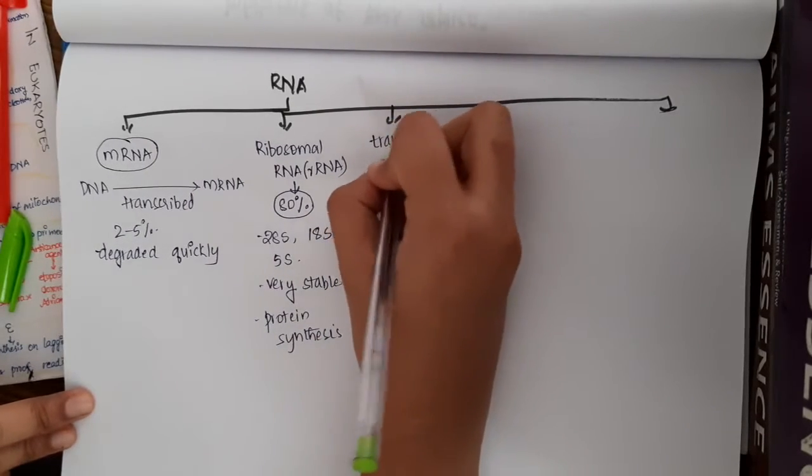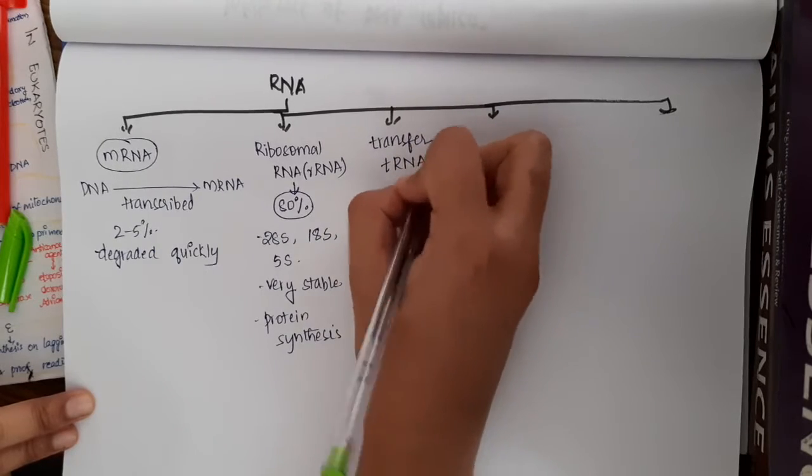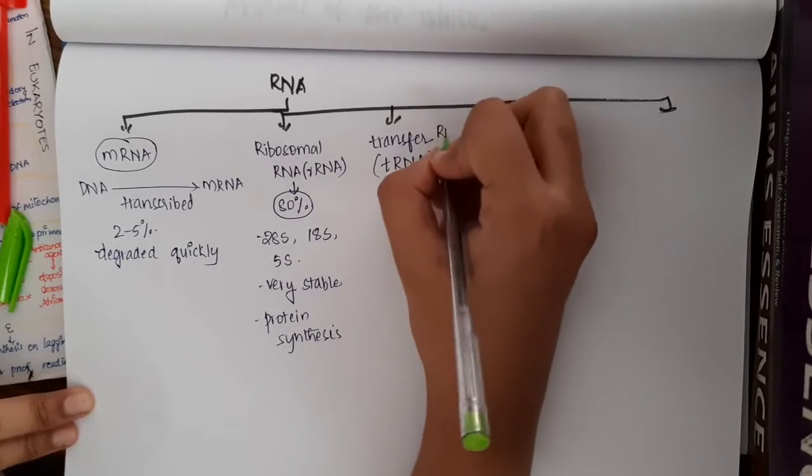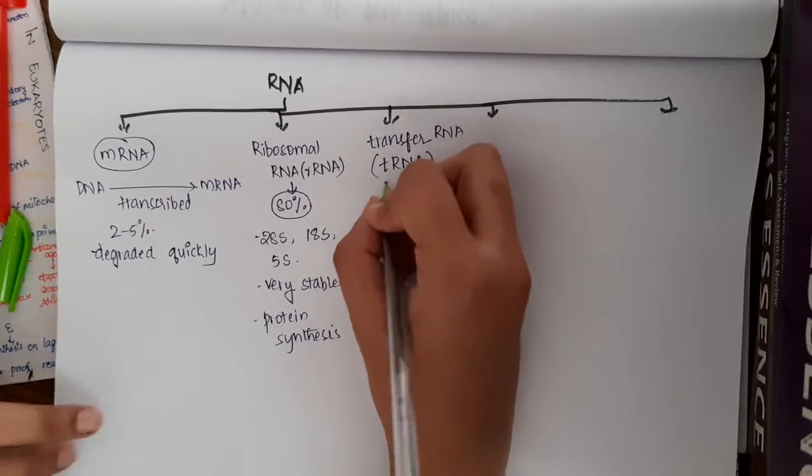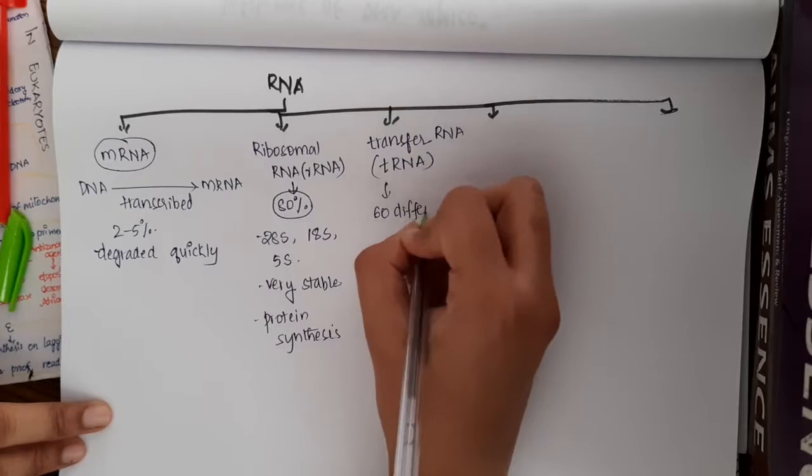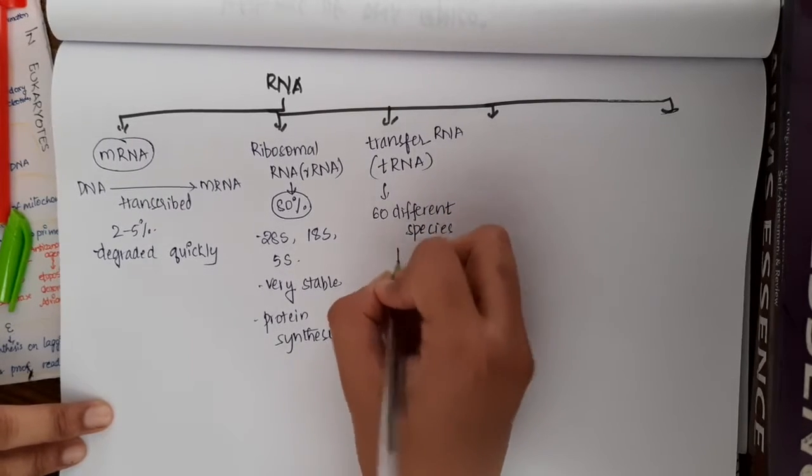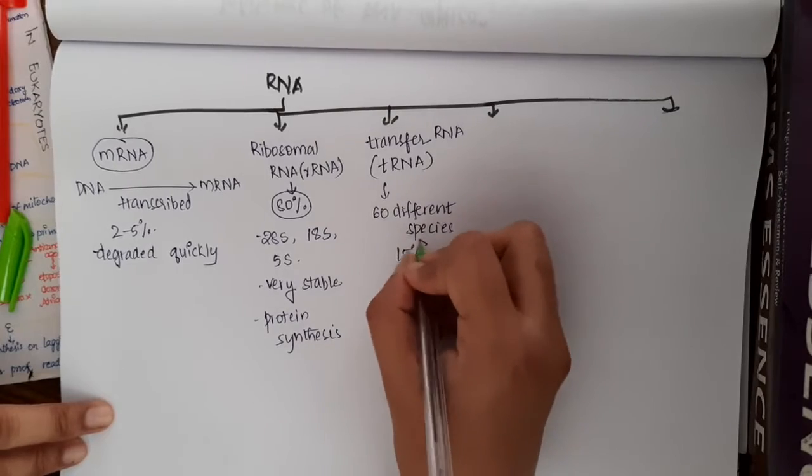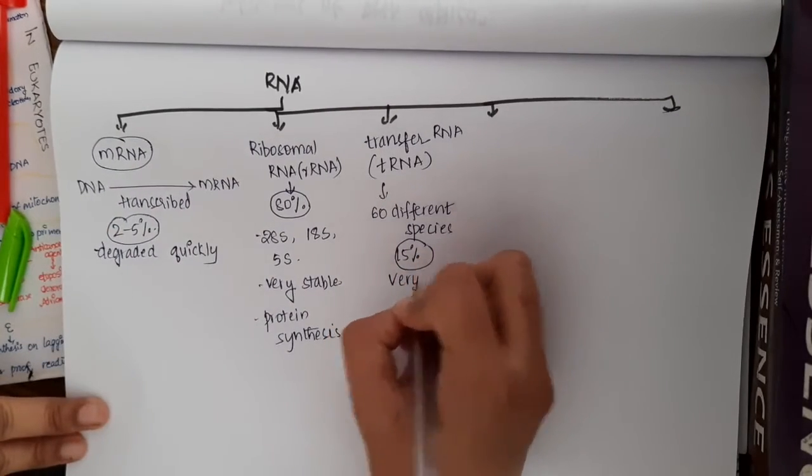Then we have tRNA, also called as transfer RNA. This transfer RNA is present in about 60 different species. This constitutes 15% of total RNA in the cell, and this is also very stable.